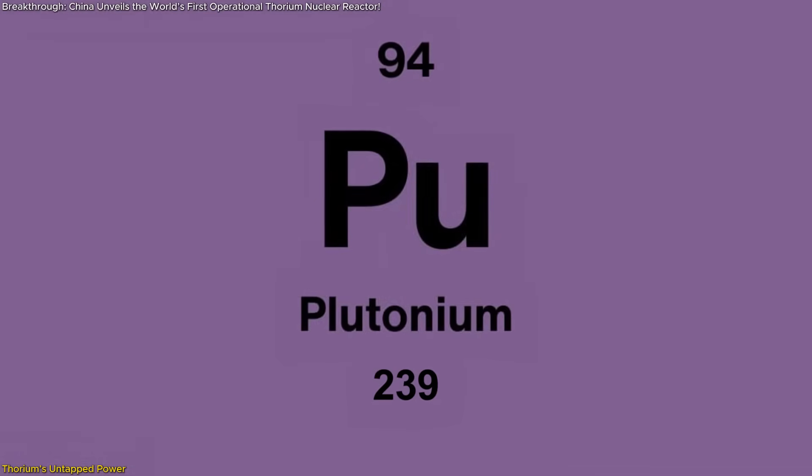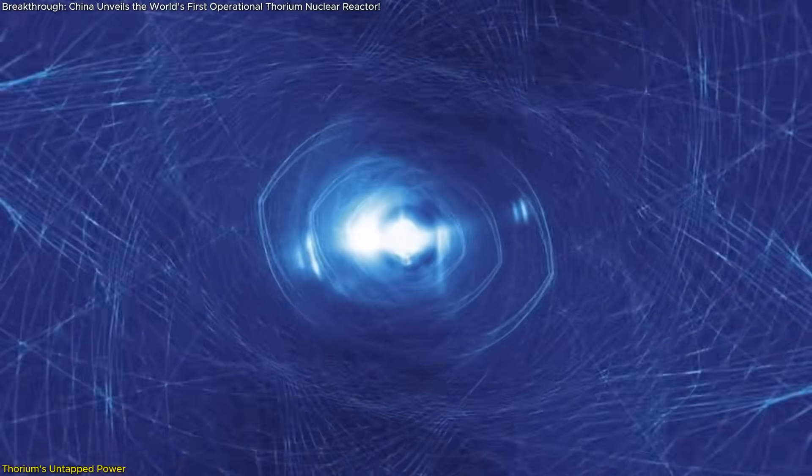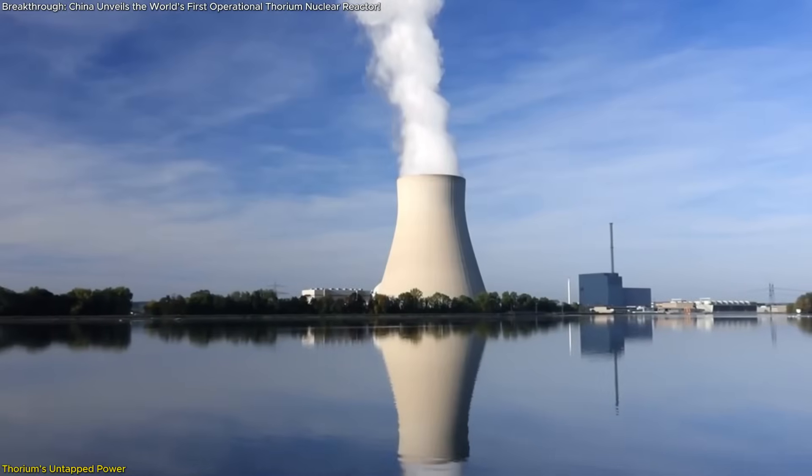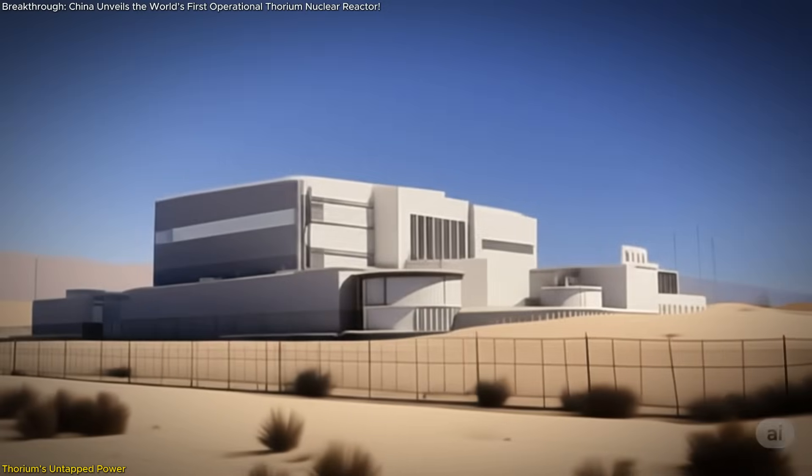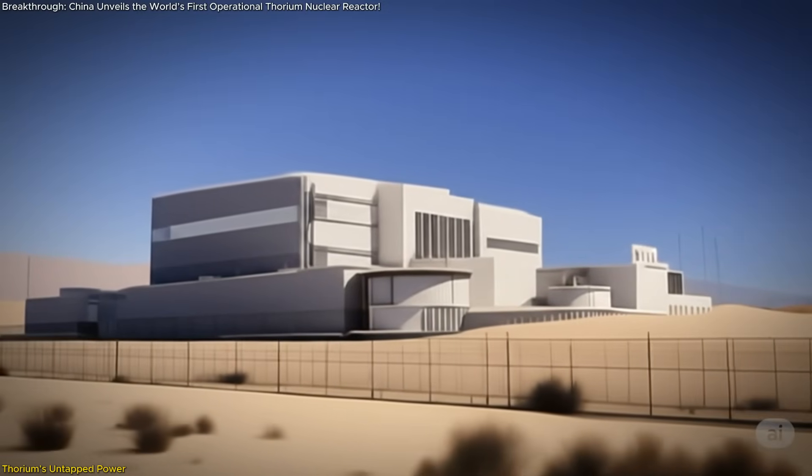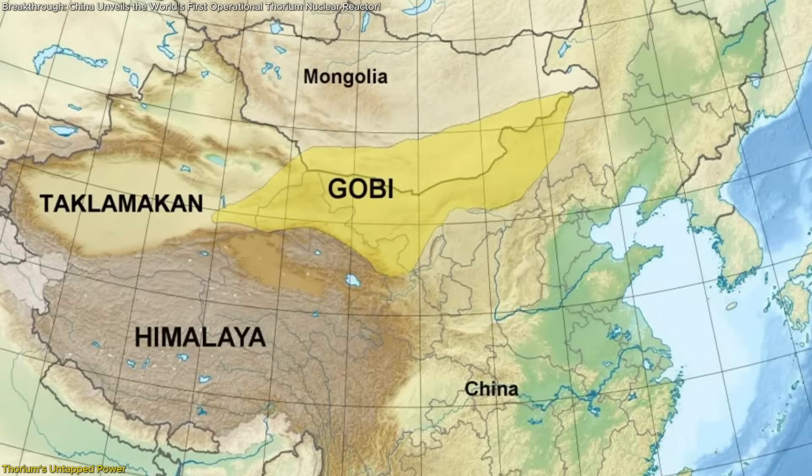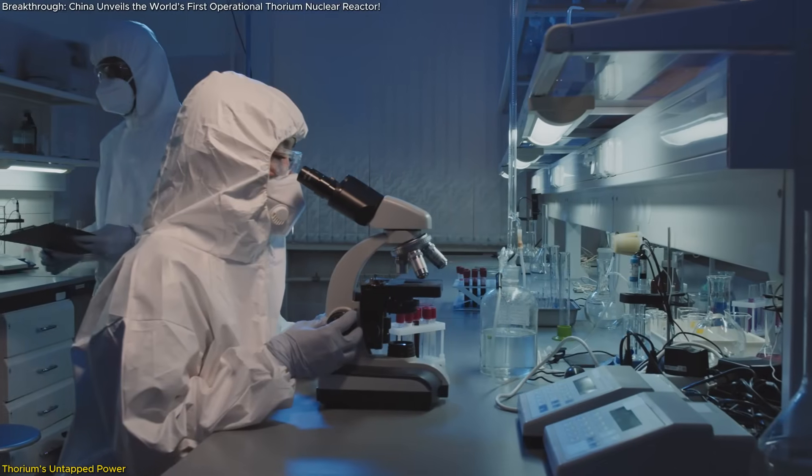It doesn't generate plutonium-239 or other easily weaponized isotopes in the same way traditional uranium reactors do. China's choice to build their experimental reactor in the Gobi Desert was also strategic. The arid location offered both safety and isolation, ideal for early-stage nuclear experiments.